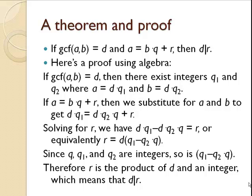Solving for r, we get d times q1 minus d times q2 times q equals r. Or if we factor out a d, we get r equals d times the quantity q1 minus q2 times q. That quantity in parentheses is an integer, because q, q1, and q2 are all integers. Therefore, r is the product of d and an integer, which means that d divides r.